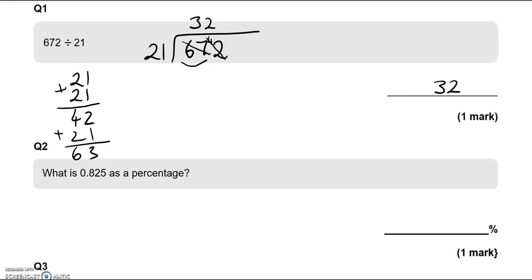In the second question we've got what is 0.825 as a percentage? So as a percentage, we go 2 spaces to the right, multiplying this by 100 in other words. So that would be 82.5%.